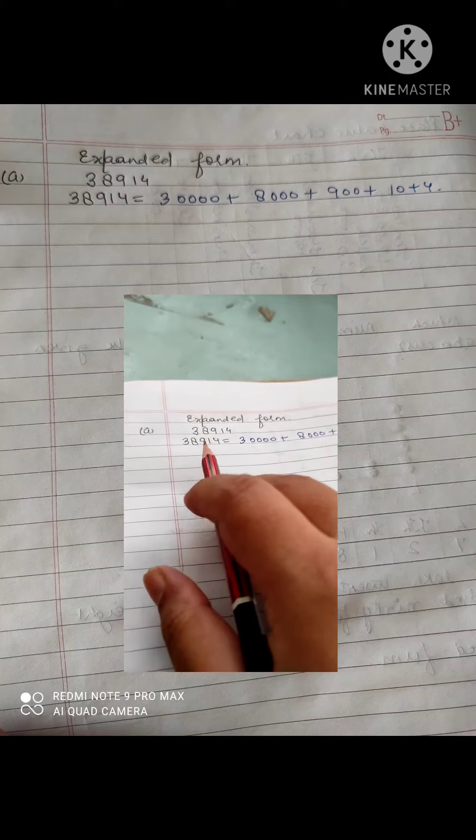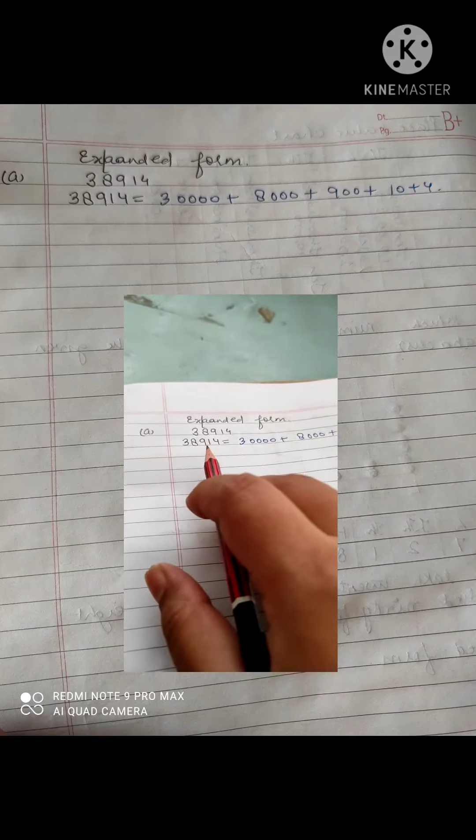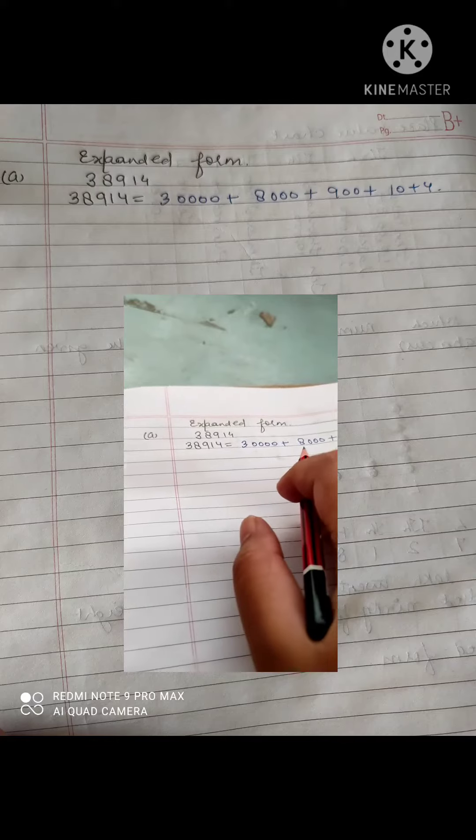You will write 8 and count the digit after 8: 1, 2, 3. You will put 3 zeros.